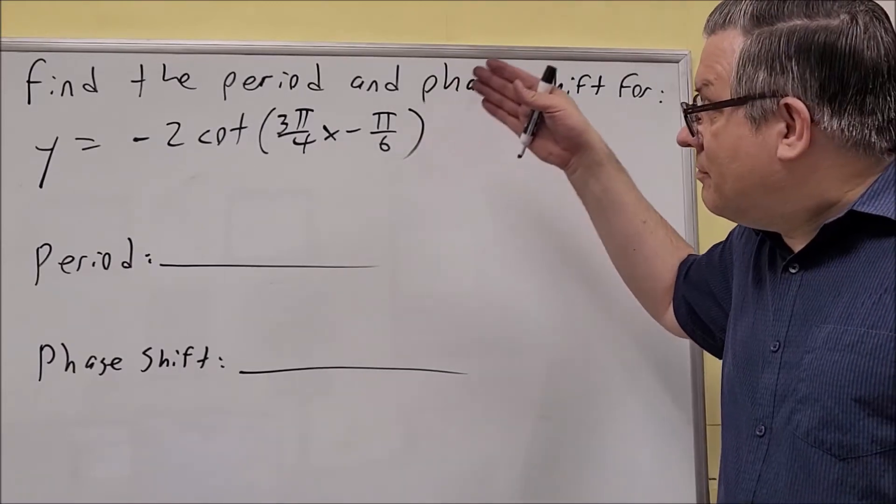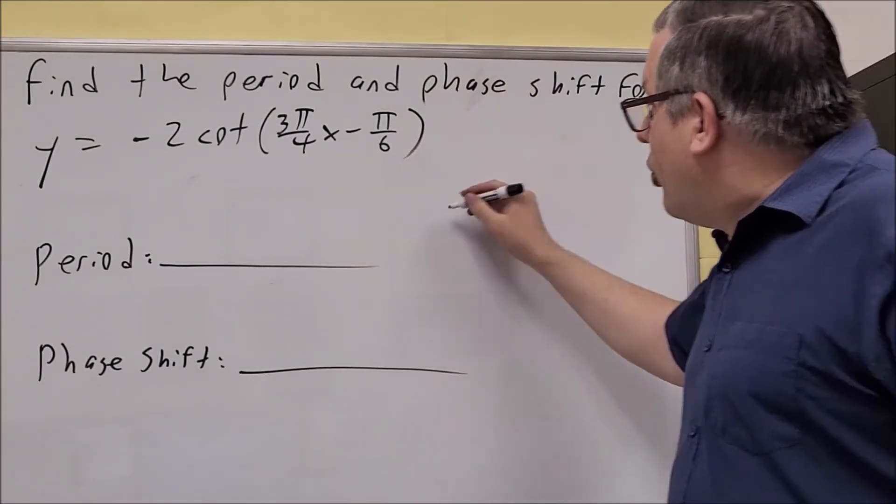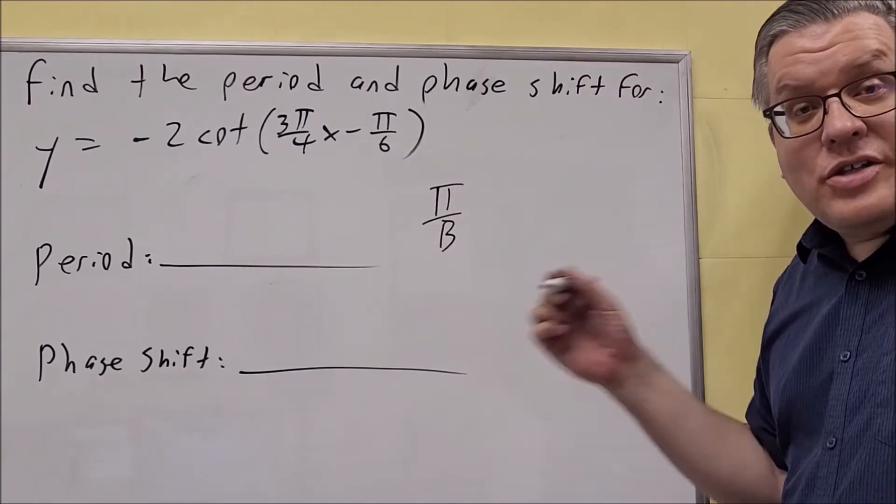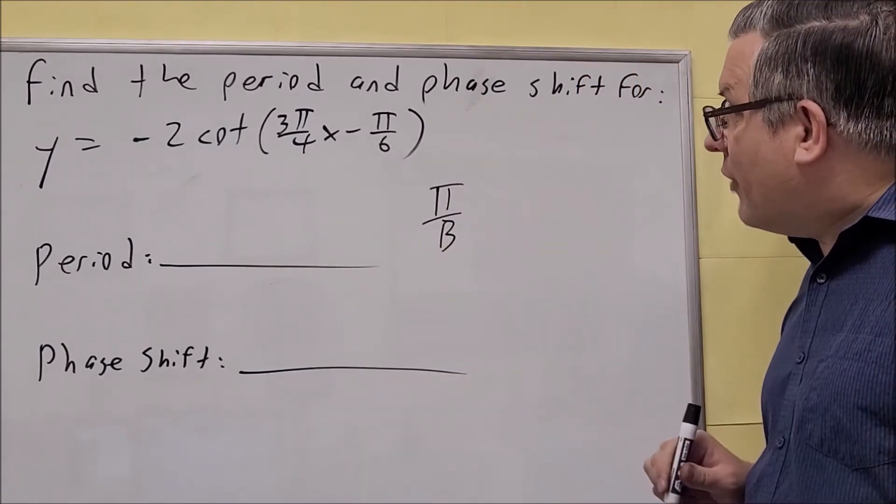This next problem is a cotangent. You see here the period formula is still going to be the same regardless of whether it's tangent or cotangent. So it's π over b here.